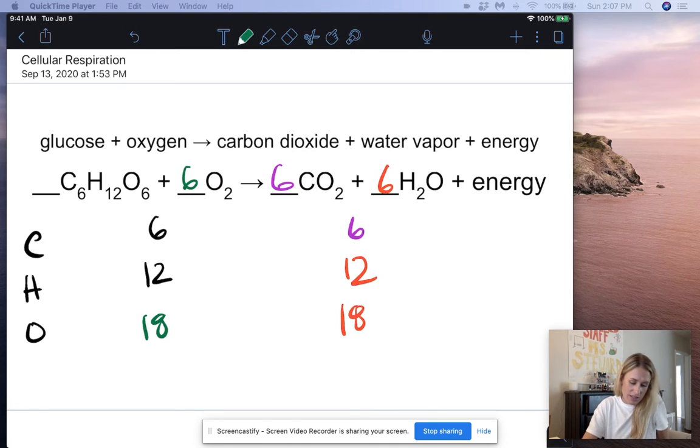Again, let's tally up those atoms one more time. I have six carbons on my reactant side. I have six carbons on my product side. We are good there. I have 12 hydrogens on my reactant side. I have 12 hydrogens on my product side. So we are good there.